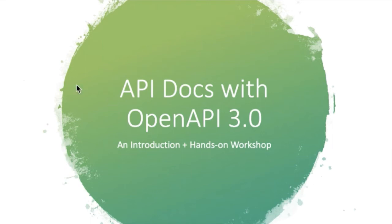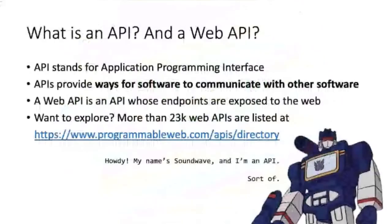API docs with OpenAPI 3.0. First, let's start with definitions. What is an API and what is a web API? Some of you may already be familiar with these acronyms. An API is basically software that communicates with other software through an interface. Unlike the user interface you use to create a PowerPoint presentation, which is visual, APIs usually involve coding.